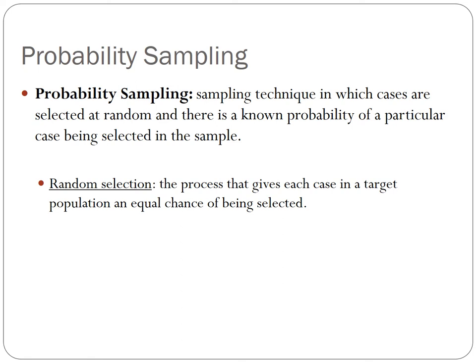The logic behind random selection is this: if you choose enough cases at random, the sample will closely represent all of the cases under investigation, at least empirically. With a randomly selected sample of the U.S. population, for example, you'll have the same percentages of men and women, blacks and whites, college educated versus non-college educated, and so on in the sample as exists in the overall population, more or less.